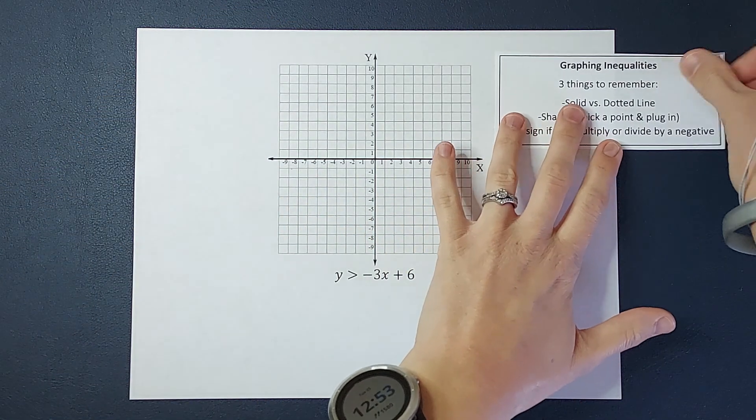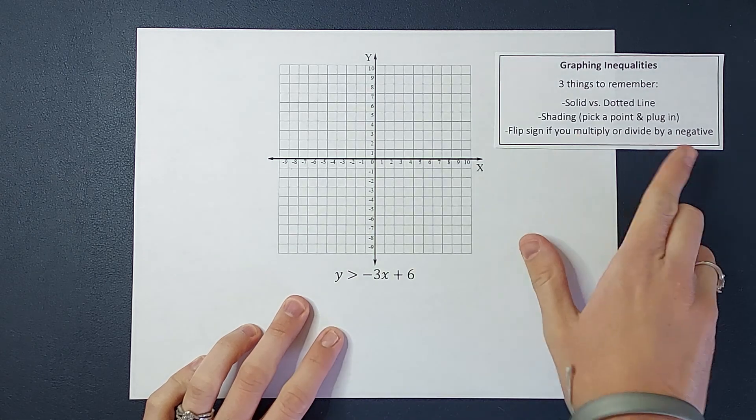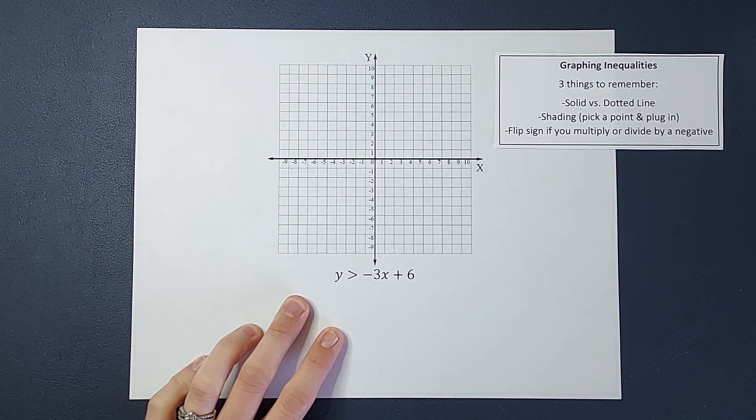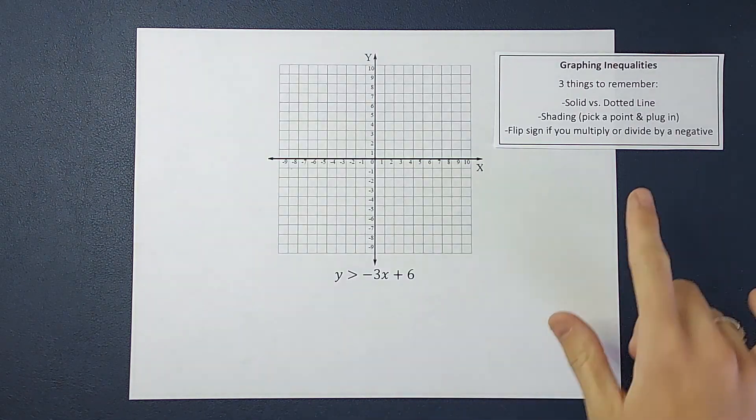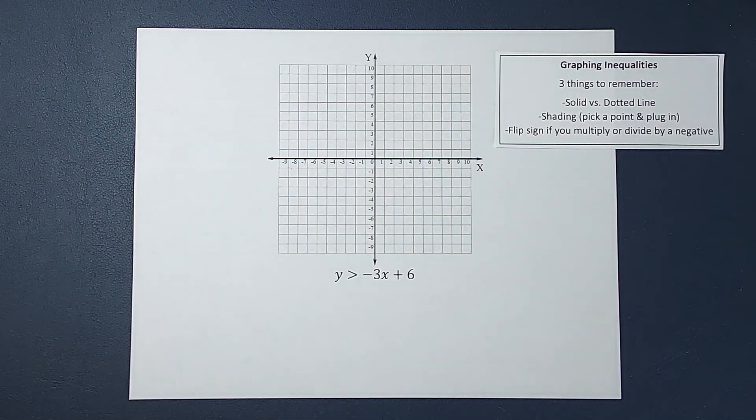The good news here is my y is already alone, so we don't actually have to worry about the bottom one here. If my y weren't alone, that would be my goal. I'd be getting my y alone. And if in that process of getting it alone, I needed to multiply or divide by a negative, we flip the sign.